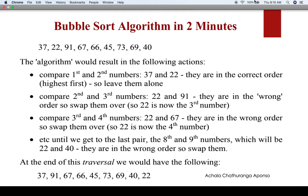At the end of this traversal, we have the following: 37, 91, 67, 66, 45, 73, 69, 40 and 22. Here we are trying to sort the numbers in descending order. After the first traversal, the number set is still not sorted, so we have to do the same operation again and again until the numbers get sorted.